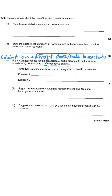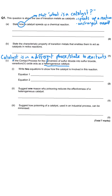They begin by asking us to state how a catalyst speeds up a chemical reaction. This is a different question to asking what a catalyst is — a catalyst is something that speeds up a chemical reaction without being used up itself. If they're asking how a catalyst speeds up a reaction, what they want you to say is that catalysts provide an alternative route, and that alternative route has a lower activation energy than the typical route. That's all you need to say for those two marks.